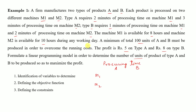Under processing time: type A requires 2 minutes on M1 and 3 minutes on M2. Type B requires 1 minute on M1 and 2 minutes on M2. These are the processing times of A and B on M1 and M2, all in minutes.